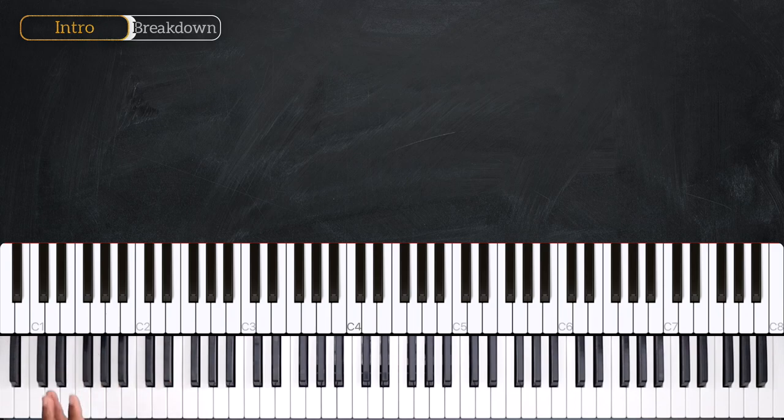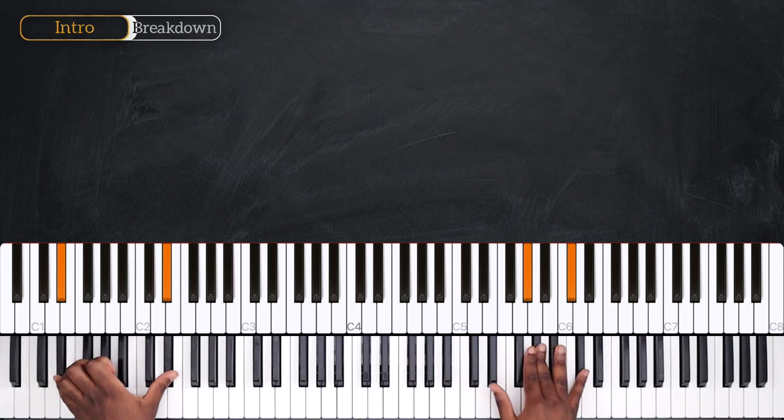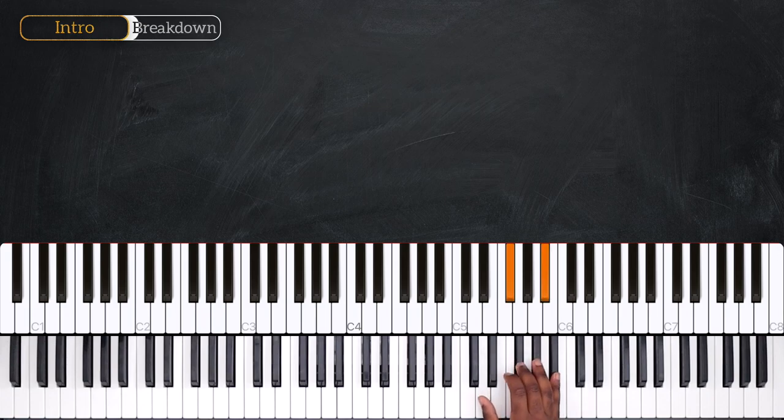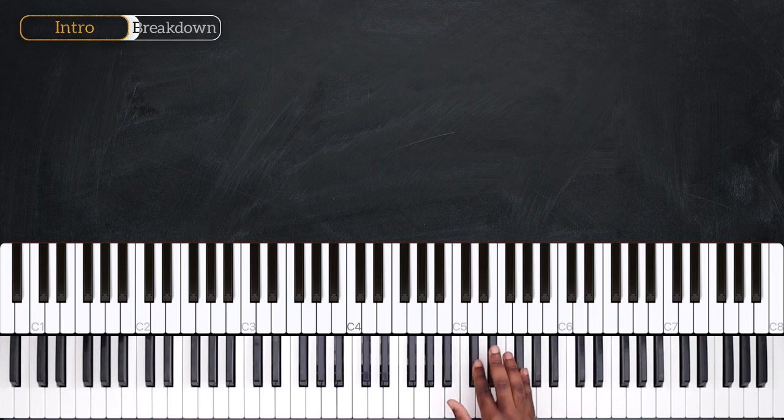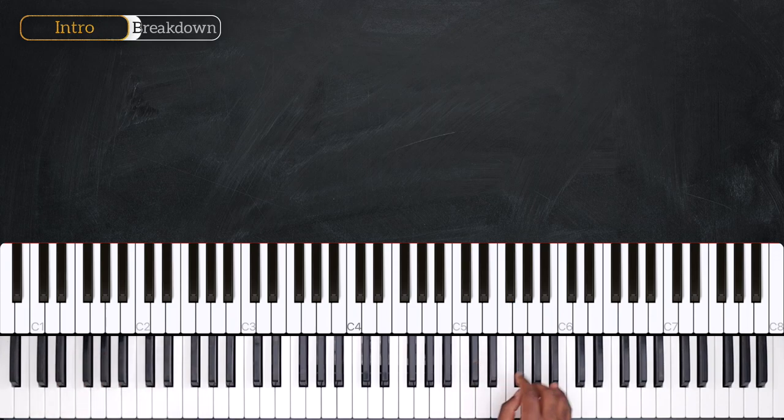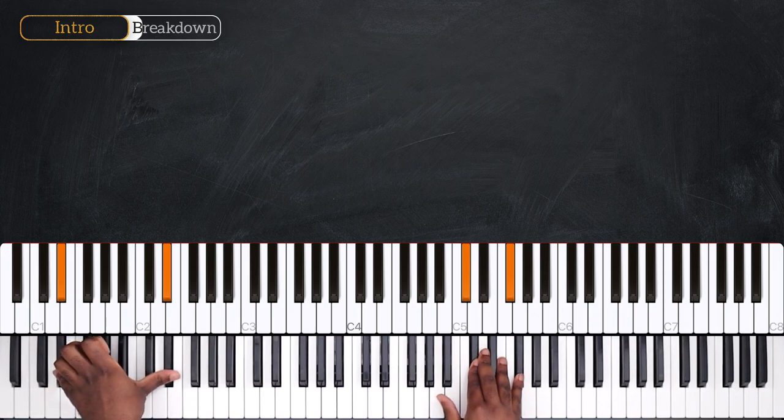After playing this octave D sharp on the left, we have this on the right hand. We're going to start playing fourths. I have G sharp, C sharp, then a major third here, F sharp, A sharp, D sharp, G sharp, and then C sharp, F sharp. After playing that, I'm going to play three times octave D sharp on the left.